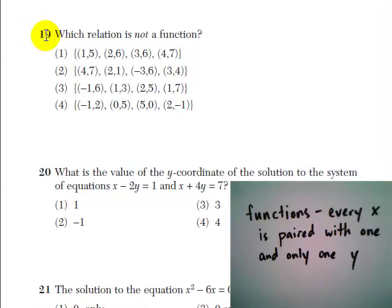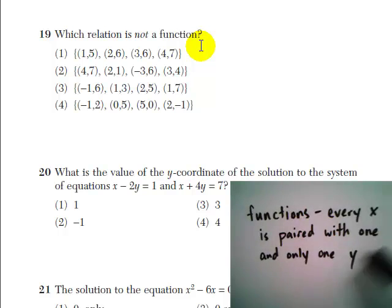Number 19 asks us, which relation is not a function? And let's just remind ourselves that in functions, every x is paired with one and only one y.